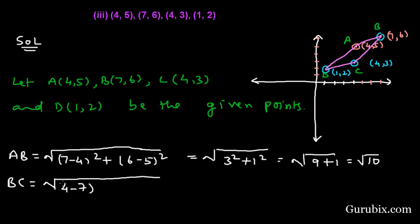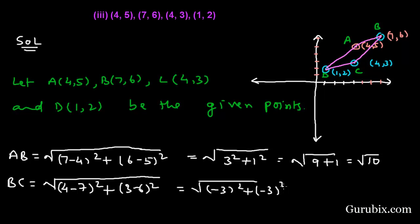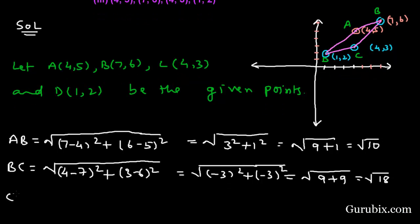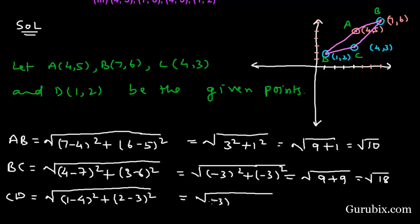Now we shall find BC = √[(4−7)² + (3−6)²] = √[(−3)² + (−3)²] = √[9 + 9] = √18. Now we shall find CD = √[(1−4)² + (2−3)²] = √[(−3)² + (−1)²] = √[9 + 1] = √10.